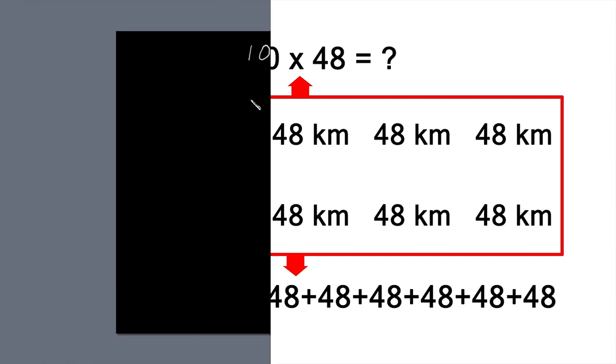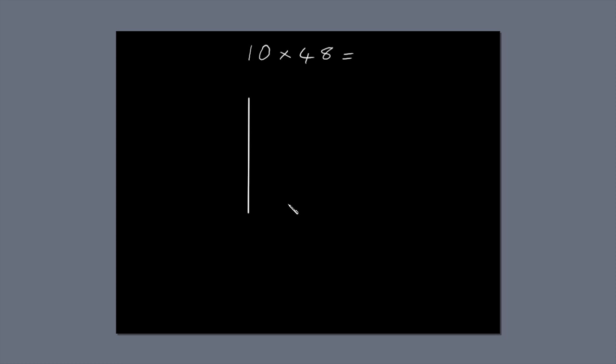Let's do it! Draw a box. Divide it into two columns, because the first number, 10, has two digits. Divide it into two rows, because the second number, 48, also has two digits. Now, draw a diagonal line through each of the smaller boxes.